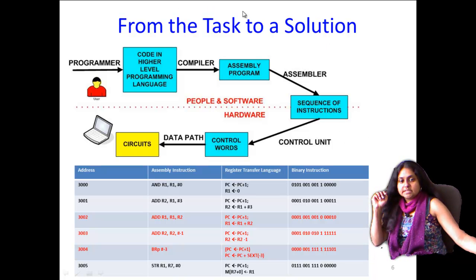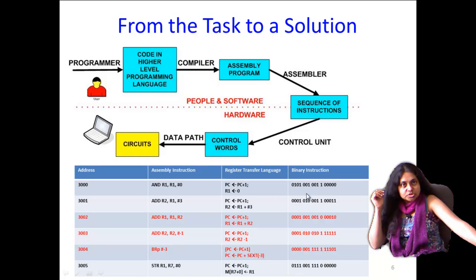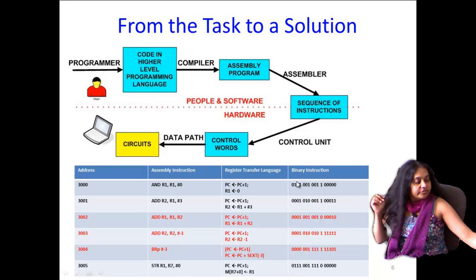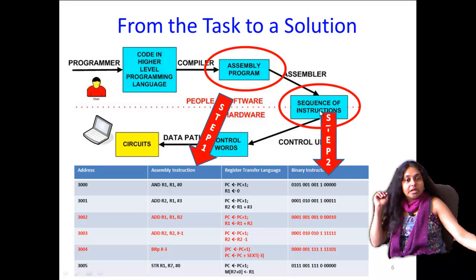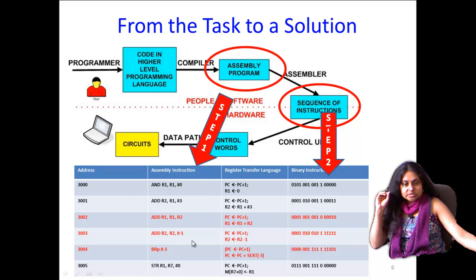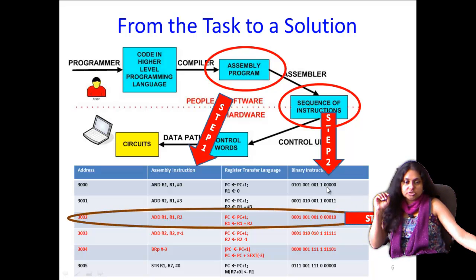Let's look at what happens when you want to do a task — say adding three numbers: 3 plus 2 plus 1. To go from that task to an actual solution at machine level, you will need an assembly program, as you've seen in EC1190. That assembly program will then get converted into a sequence of smaller instructions, or micro instructions, through some sort of register transfer.